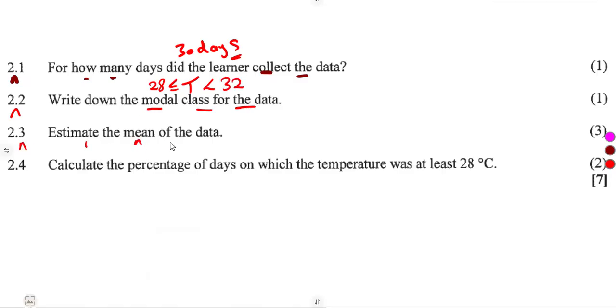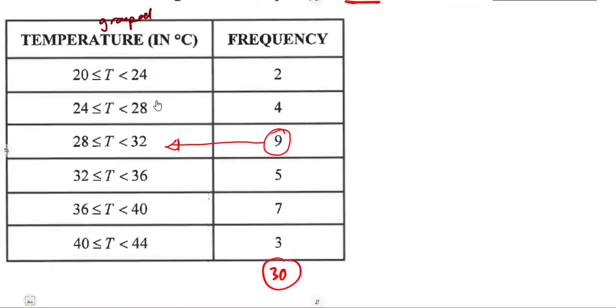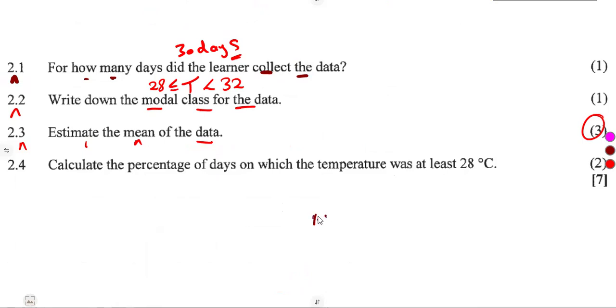Then, 2.3: Estimate the mean of the data for three marks. The mean can be determined. Remember, we are dealing with grouped data. So you are going to need the sum of the product of frequency to their midpoints. It follows that the mean value will be equal to the sum of the frequency to the midpoint, the sum of the products, frequency and the midpoints, over the sum of the frequencies.